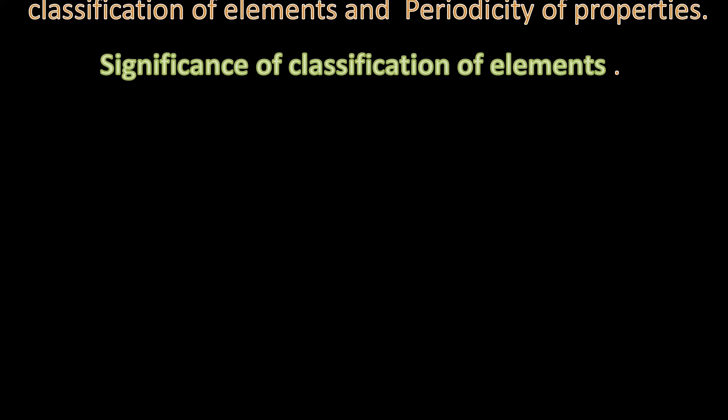What is the meaning of classification? That is grouping elements. What is the meaning of periodicity of properties? Properties of elements repeating at regular intervals when they are arranged in a particular order. Before we really go into the details of classification and periodicity of properties of elements, we will first understand what is the significance of classification of elements.